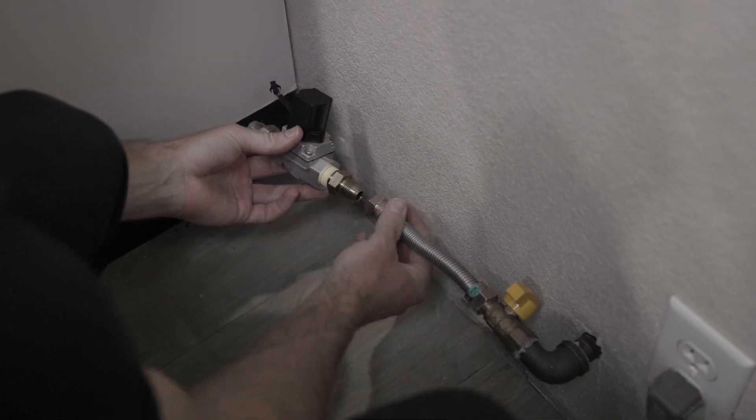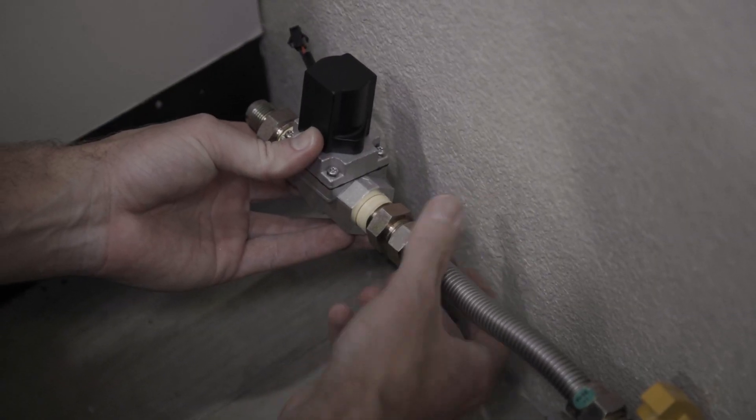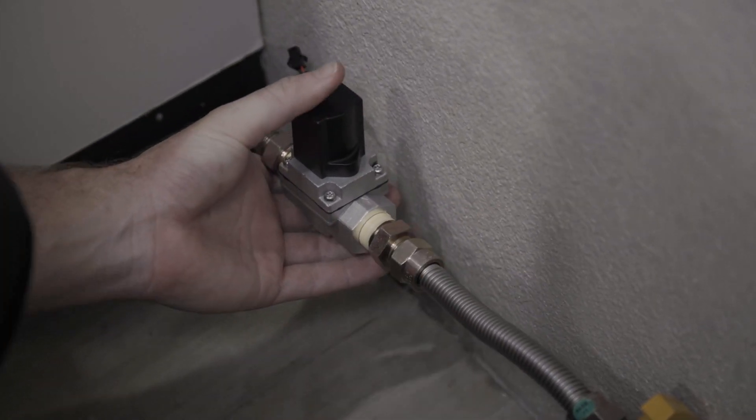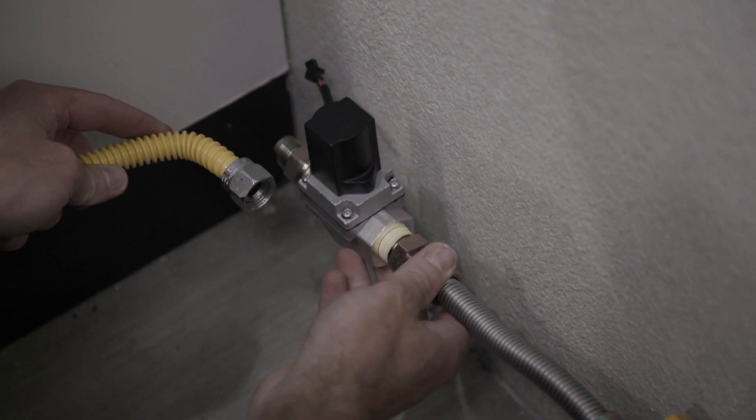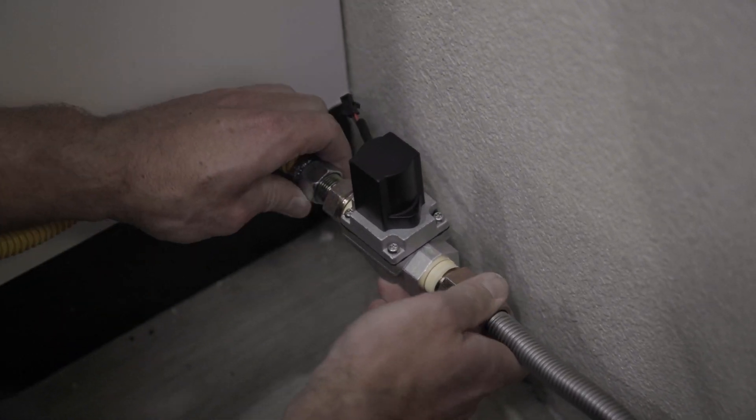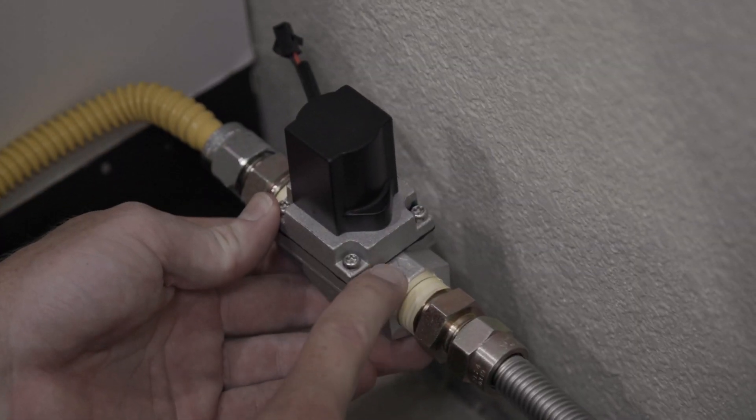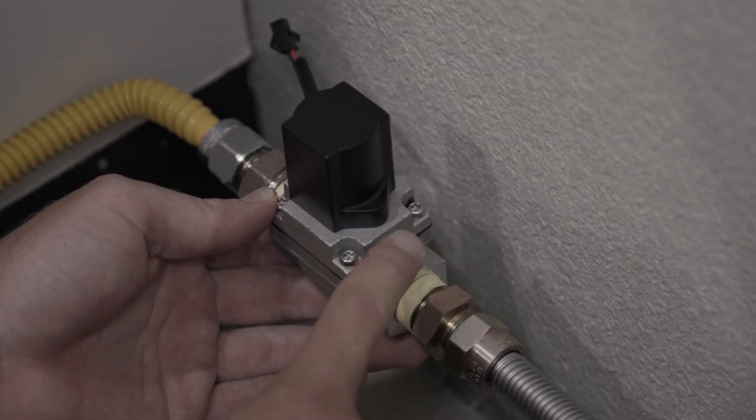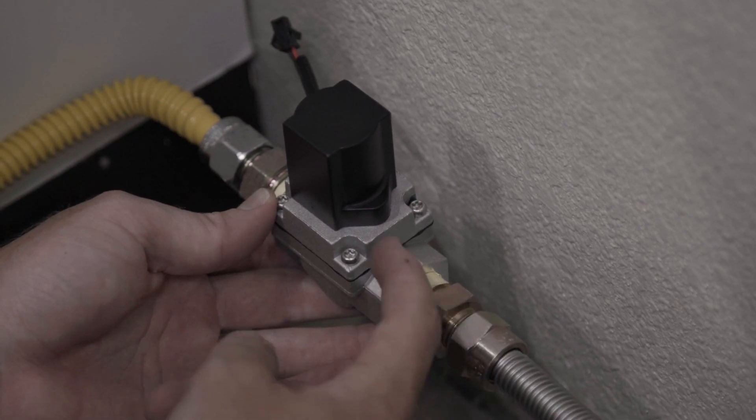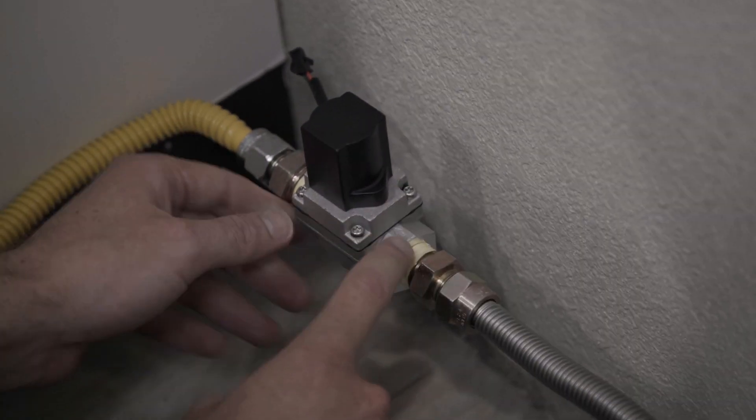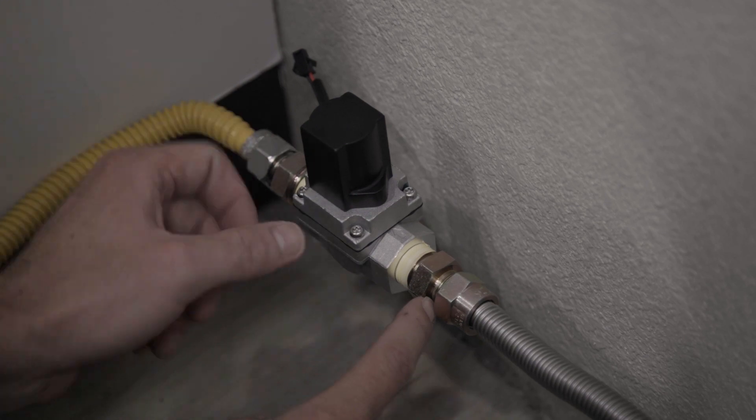Now you're going to take the solenoid and connect it to the flexible line that you installed. Next, connect the oven hose line to the other end of the solenoid. It's important to check on the solenoid. The arrow is in the direction of the flow towards the oven. If it's installed backwards, the device will not work.